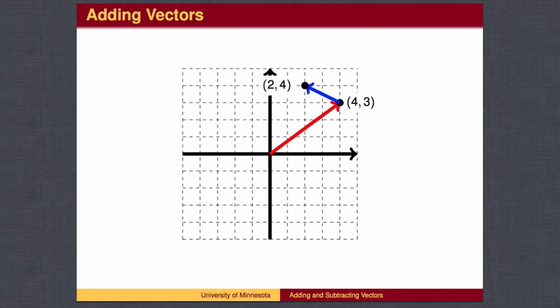Geometrically, we can see the answer by moving the blue vector so that it starts where the red vector ends. If we go 2 left and 1 up from the point 4, 3, we wind up at the point 2, 4.